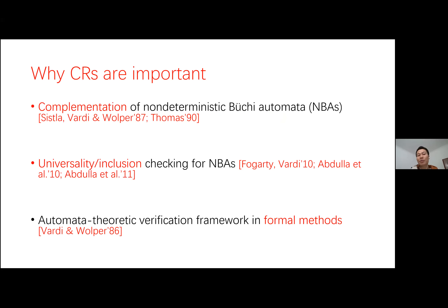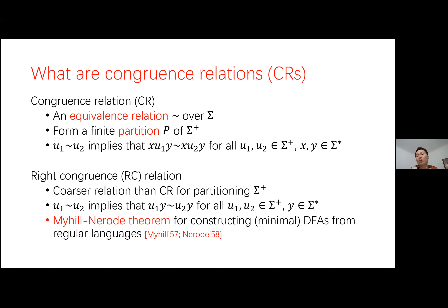Why are congruence relations so important in formal methods? Because they are widely used in many aspects, such as the complementation of nondeterministic Büchi automata, or NBAs for short, and universality and inclusion checking for NBAs, and the automata-theoretic verification framework. Congruence relations are a type of equivalence relations with respect to a given language, and so they can form a finite partition of the finite words. In this talk, we also consider a coarser equivalence relation than congruence relations.